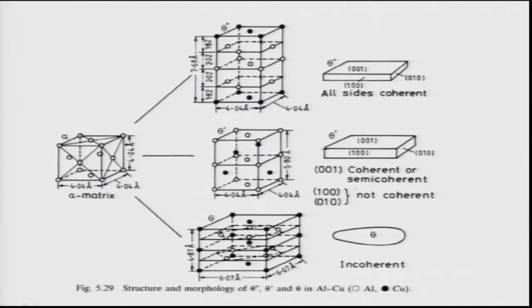GP zones are just a few layers of copper atoms sitting on the {100} planes of the alpha aluminum lattice. Theta double prime is a coherent structure along all interfaces. Theta prime has coherent or semi-coherent interfaces along {001} planes but non-coherent along {100} or {010} planes. The equilibrium precipitate theta is completely incoherent.